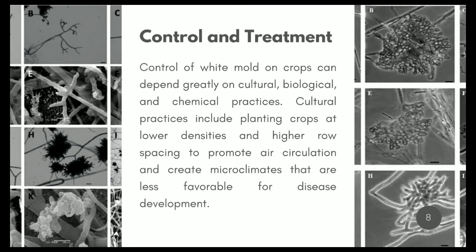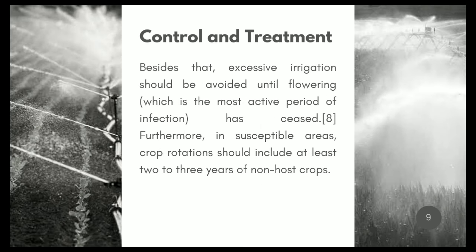Control of white mold on crops can depend greatly on cultural, biological, and chemical practices. Cultural practices include planting crops at lower densities and higher row spacing to promote air circulation and create microclimates that are less favorable for disease development. Excessive irrigation should also be avoided until flowering has ceased.